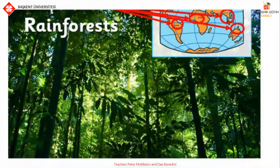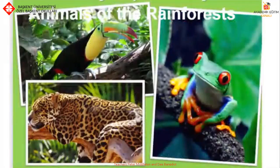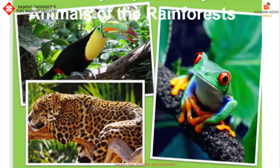This is a rainforest. Can you think of animals found in the rainforests? You can find a toucan, a puma and a frog in the rainforests. What other animals can you find?